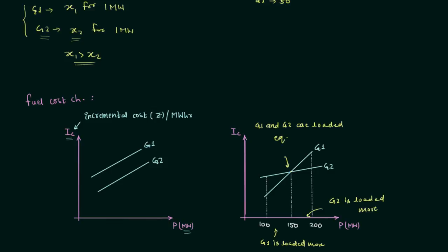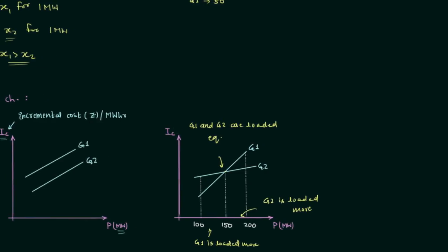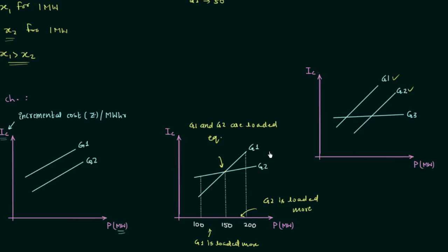The third and last example is very important. Here we see characteristics of three generators: G1, G2, and G3. The incremental cost of G3 is constant — it is not increasing. When this happens, we always load G3 more, because producing electricity using G3 costs the same regardless of output. After maximally loading G3, we compare between G1 and G2 as done in the previous examples.